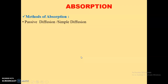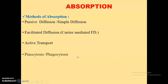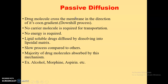Methods of absorption: drugs get absorbed by a number of mechanisms. The important ones are: first, passive diffusion or simple diffusion, also called passive transport mechanism; second, facilitated diffusion or carrier-mediated facilitated diffusion; third, active transport; and last, pinocytosis or phagocytosis. Let us discuss each method one by one.